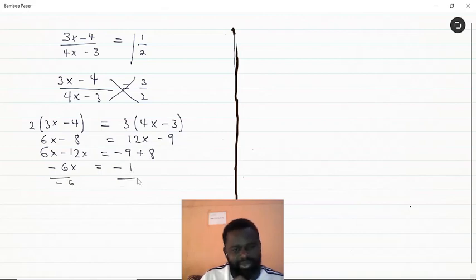We divide both sides by minus 6. The negatives cancel out, and we get x equals one over six. This is our final answer for this question.